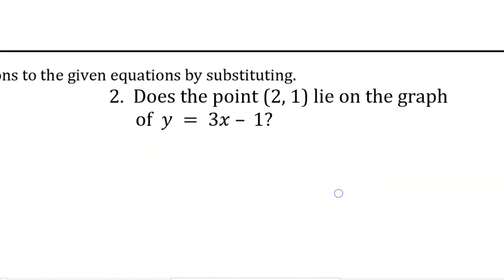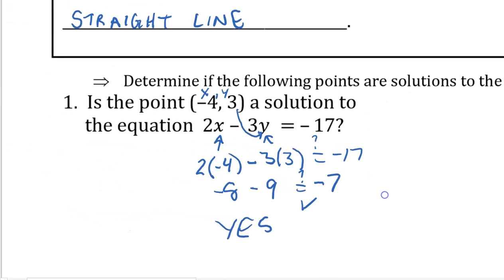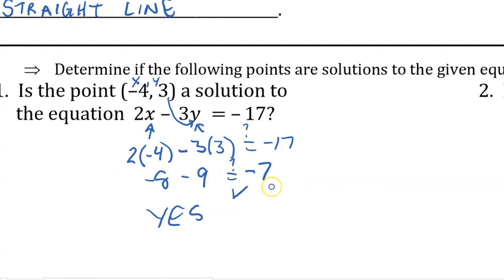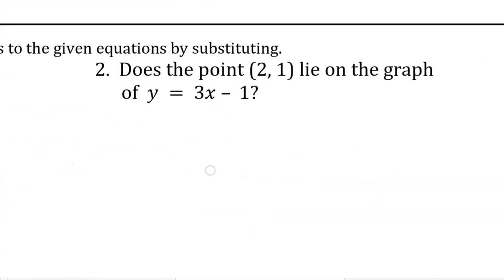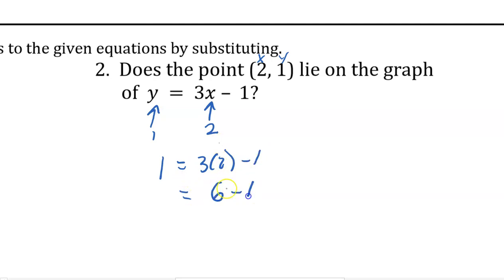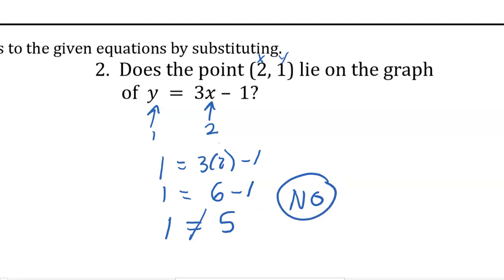Number 2: does the point (2, 1) lie on the graph of y equals 3x minus 1? This is actually asking the same question as number 1 — lying on the graph of that function is the same as being a solution to that equation. The point 2 comma 1: x is first, then y. So we put in 2 for x and 1 for y. Does 1 equal 3 times 2 minus 1? Well, 3 times 2 is 6, so 1 does not equal 5. Therefore the answer is no — not a solution, does not lie on the graph.